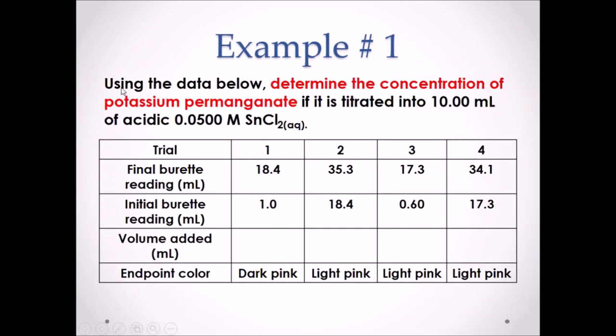Example number 1. Using the data below, determine the concentration of potassium permanganate if it is titrated into a 10 mL sample of acidic 0.0500 moles per liter tin chloride. Pause this video and attempt this example. If we consider the table provided, it does not tell us what substance is being recorded for volume. But if we look in the question, we can see that there are 10 mL of tin chloride. That means it has the set volume. So the table corresponds to potassium permanganate.